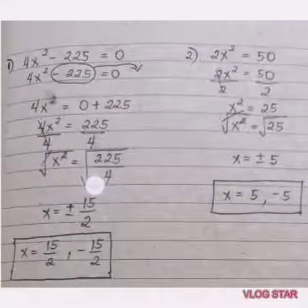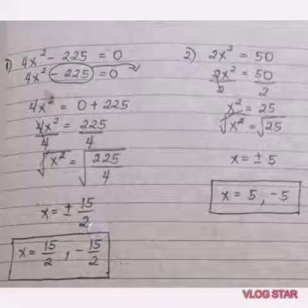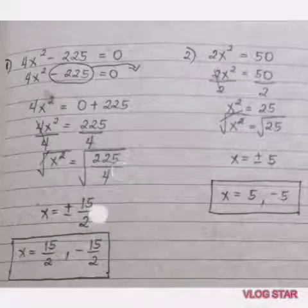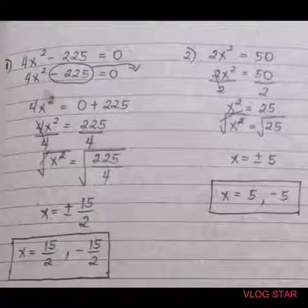The square root of 225 over 4 is 15 over 2. The square root of 225 is 15. The square root of 4 is 2. Since this is a square root, it is positive negative.